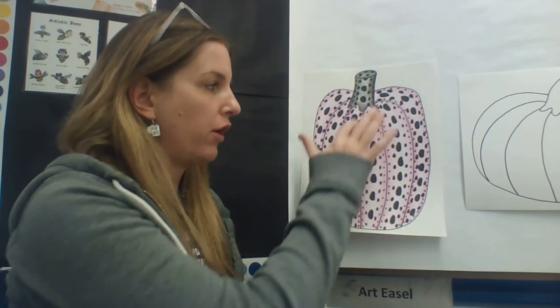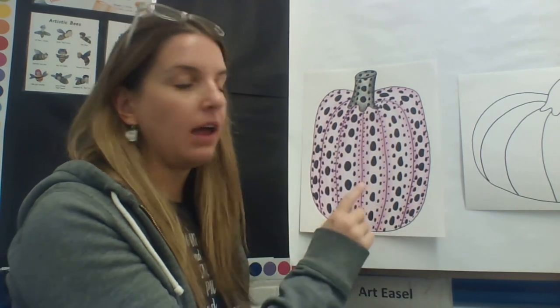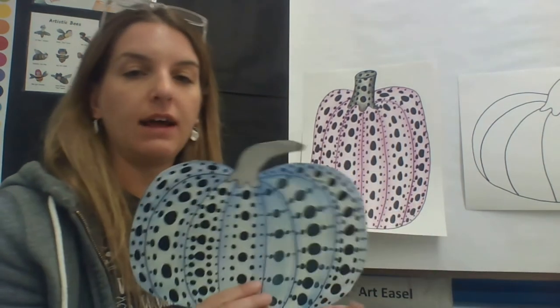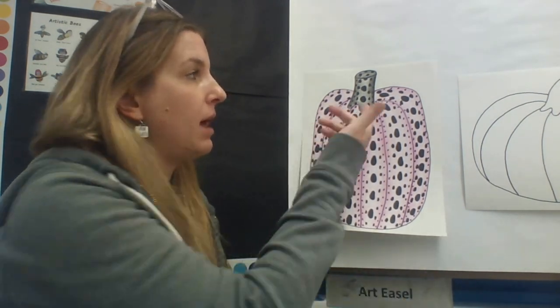And here is my completed Kusama pumpkin. You can see I put all the large circles in the middle, and they just get smaller and smaller toward the outside of each shape. I also decided since my other examples, I left the stems clean, that I would see what it looked like if I put dots on my stem. And I actually kind of like it. It's a very interesting look.